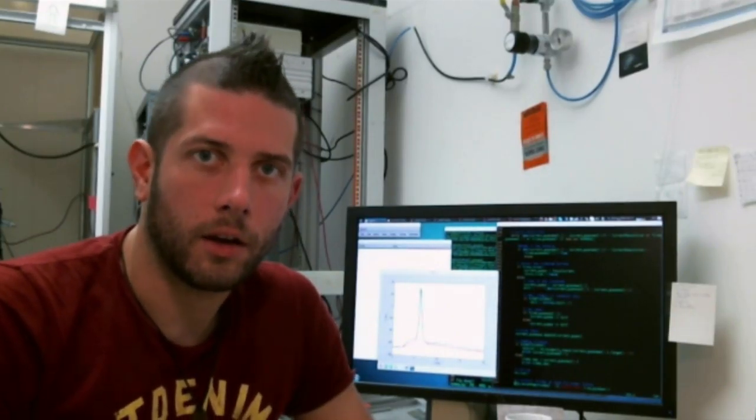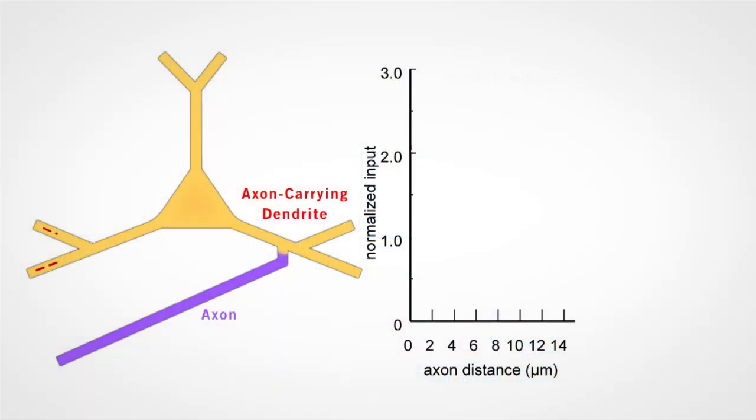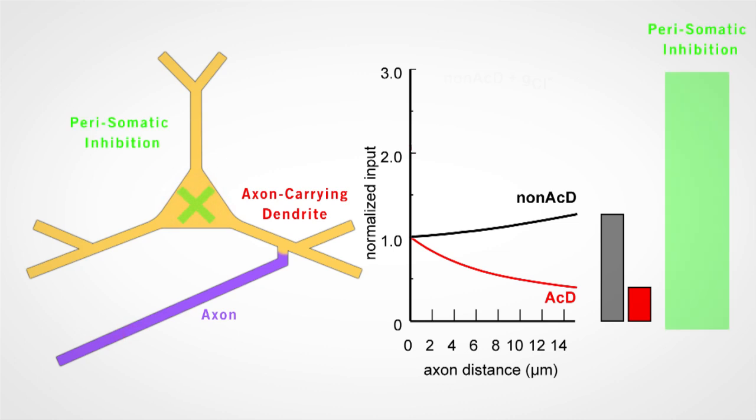Finally, we evaluated the input efficiency of both types of dendrites. Axon-carrying branches needed generally less synaptic input to trigger action potentials than regular dendrites. Furthermore, we modeled the effect of perisomatic inhibition as it occurs during more physiological network states.